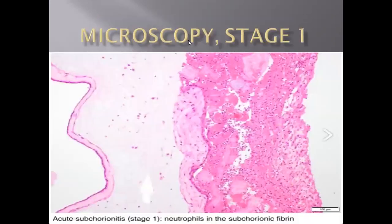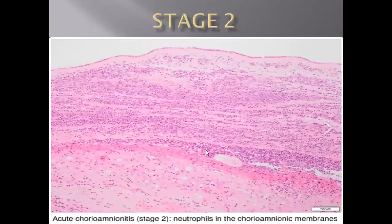In terms of microscopy, in Stage 1, the neutrophilic inflammatory response lies below the chorionic membrane or up to one-third of the chorionic membrane. As described, this inflammatory response starts from the maternal side and goes toward the fetal side. In Stage 2, it fully involves the chorionic membrane and goes further down to involve the amniotic membrane as well.